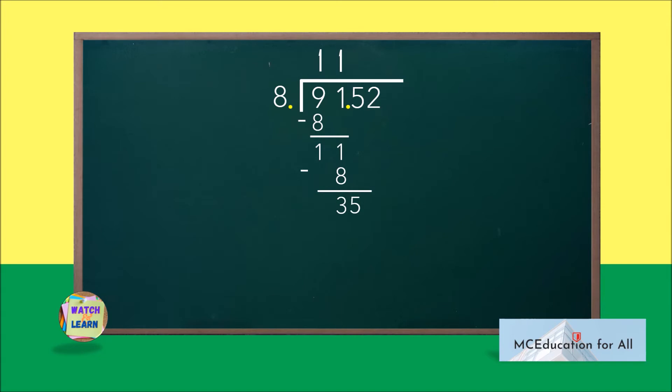Put your decimal point in the quotient directly above where it falls in 91.52. As a result, the answer is 11.44.